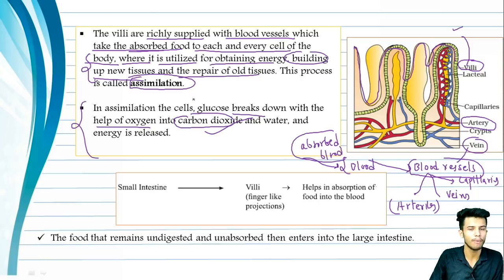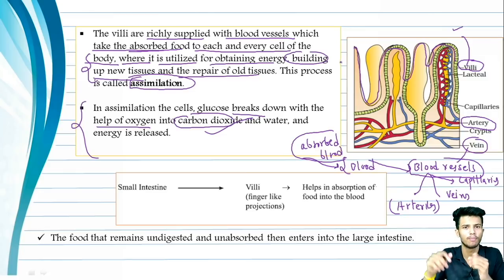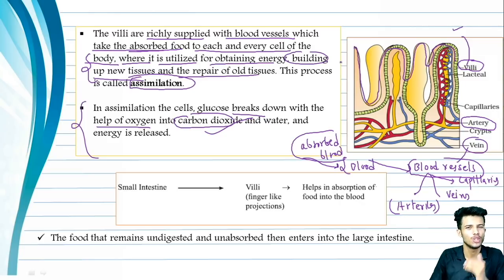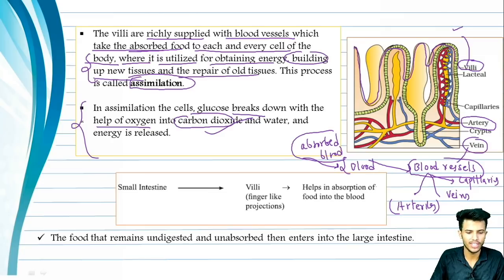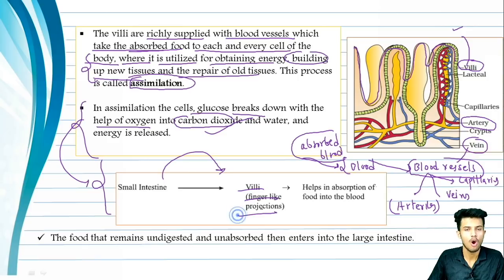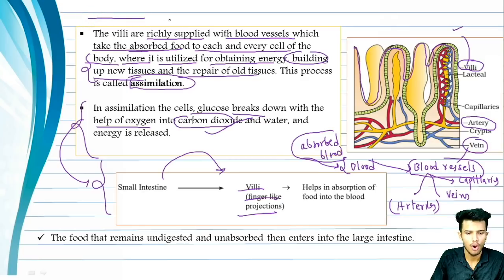So to summarize: absorption takes place in the small intestine wall, where the villi — those finger-like projections — increase the surface area. The villi have many blood vessels. When blood flows through them carrying digested food, that food reaches the destination cells to be utilized for energy. That is assimilation.